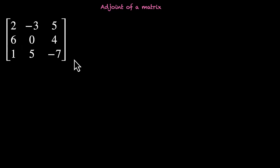Let's say we have this 3 by 3 matrix: 2, minus 3, 5, 6, 0, 4, 1, 5, minus 7.